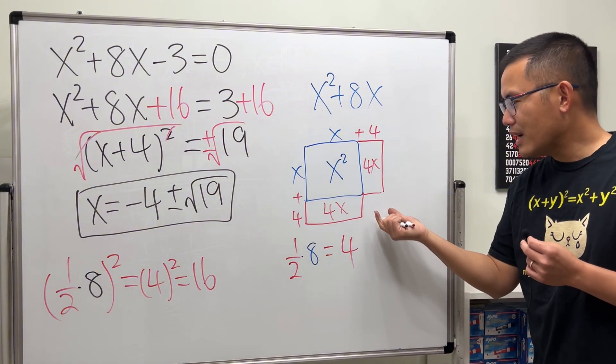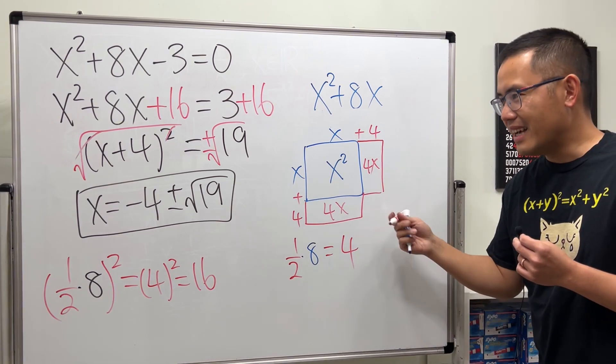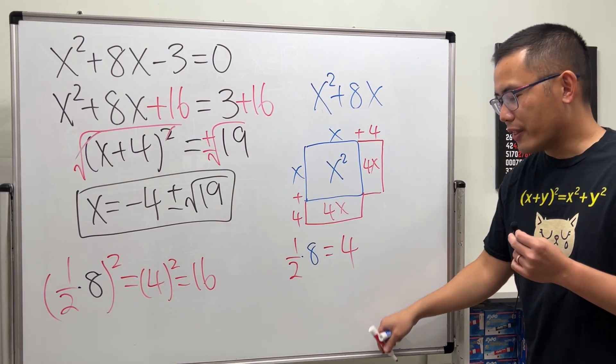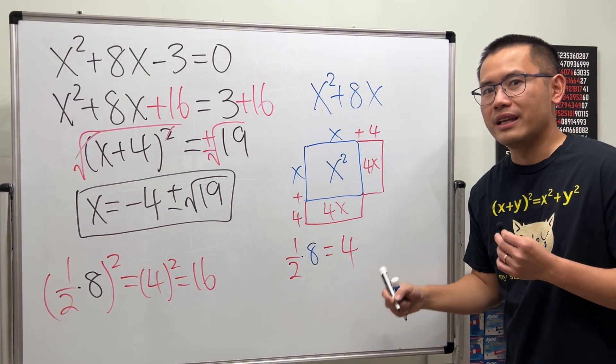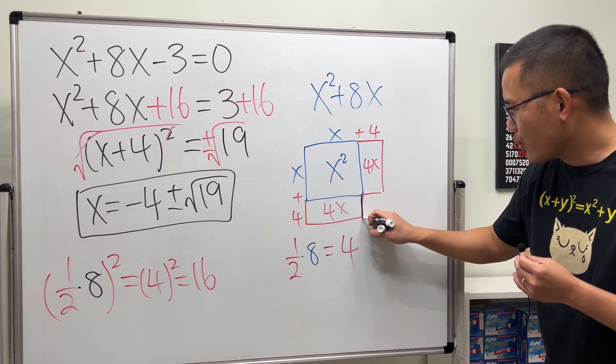Now if you do this, you can see that we are missing a little corner. What's this corner? Yes, this is the part that we will think how to add so that we can literally complete the square, this little corner.